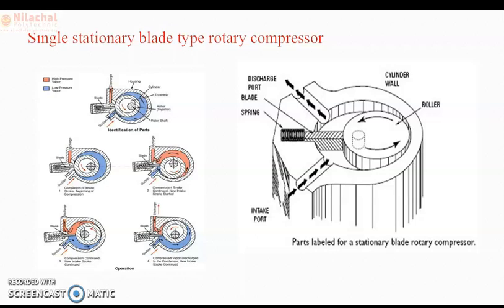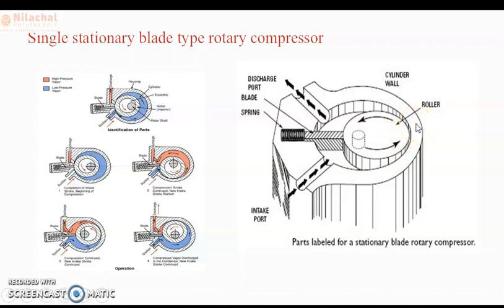Since the blade separates the suction and the discharge ports, it is sometimes called the sealing blade, because it separates the high pressure side and the low pressure side — the suction side is the low pressure side and the delivery side is the high pressure side. When the rotor rotates, the roller also rotates so that it always touches the cylinder wall.